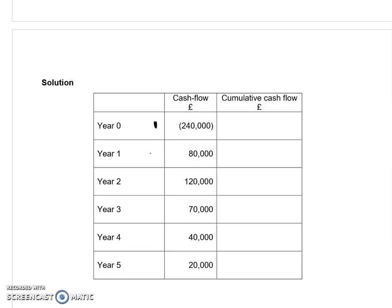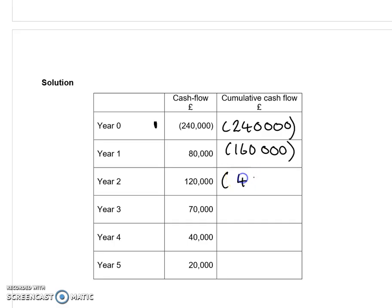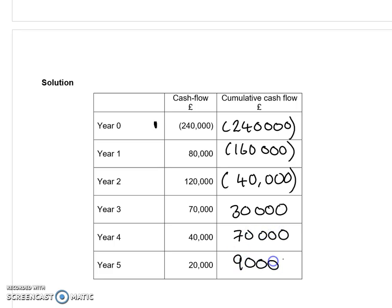If we complete the table, we can see there's our outflow of cash. And then in year one we have £80,000, and that means we've recouped £80,000 of that £240,000. In year two we recoup a further £120,000, which gives us £40,000 remaining. In year three we recoup £70,000, which will give us a net inflow of cash — we're now moving into positive territory. And then the net inflows just increase over the five-year period.